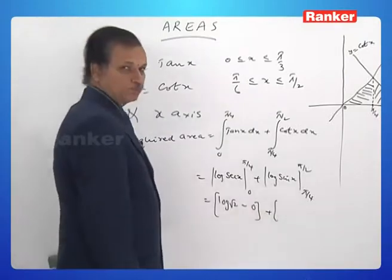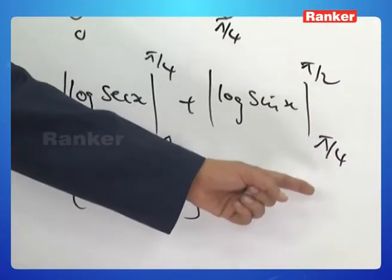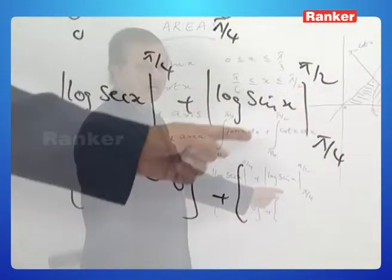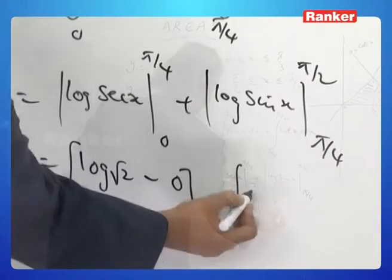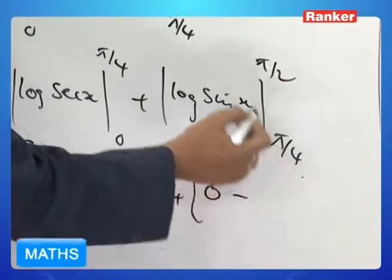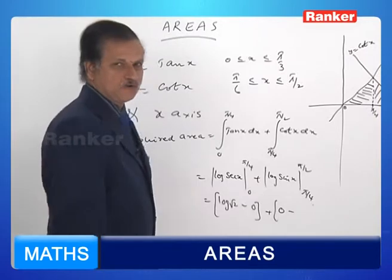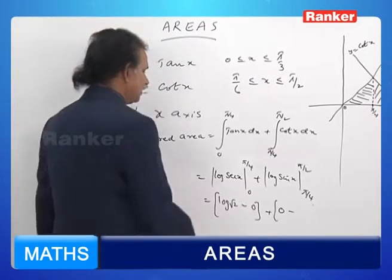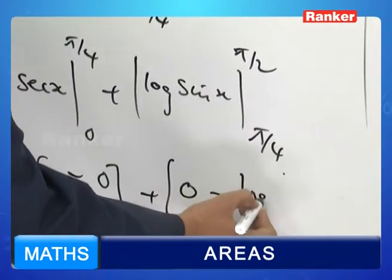Plus pi by 2. You substitute these limits. Sin pi by 2 is 1 and log 1 is 0. So 0 minus pi by 4. Sin pi by 4, sin 45 degrees is 1 by root 2. Hence it is log 1 by root 2.